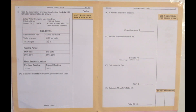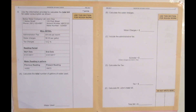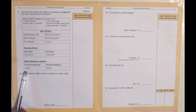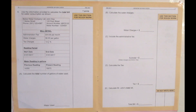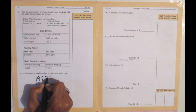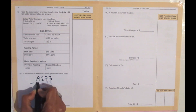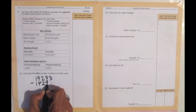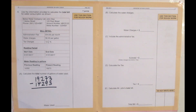To start solving the bill, part A asks us to calculate the total number of gallons of water used. To find the amount of water used, it's the present reading minus the previous reading, and that gives us the total gallons used. So it's 19,273 gallons minus 14,293 gallons.